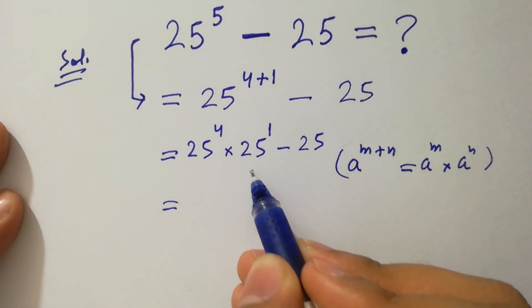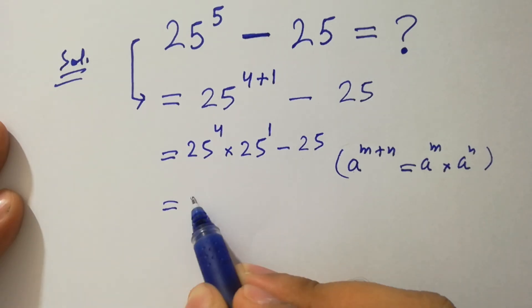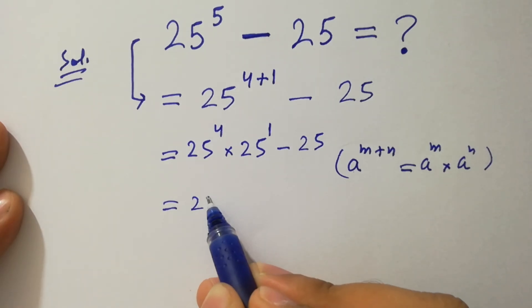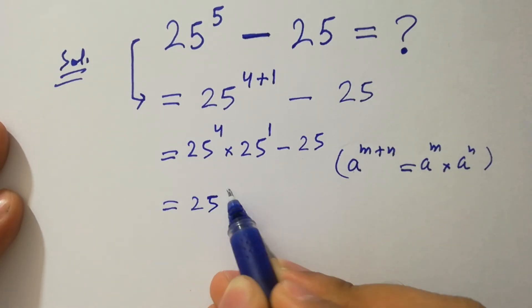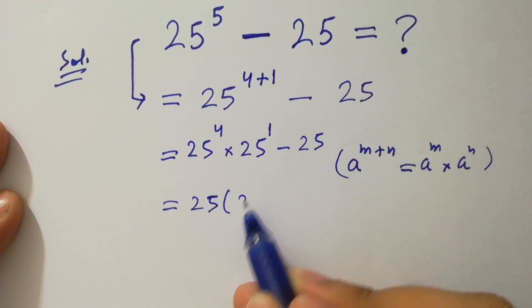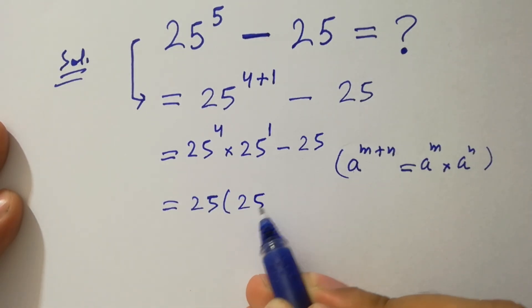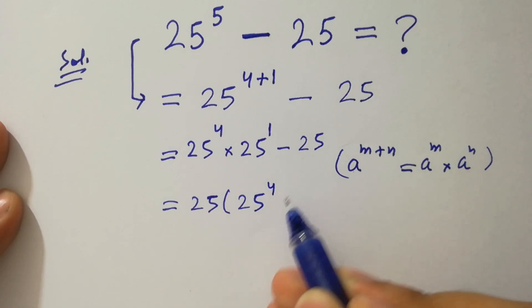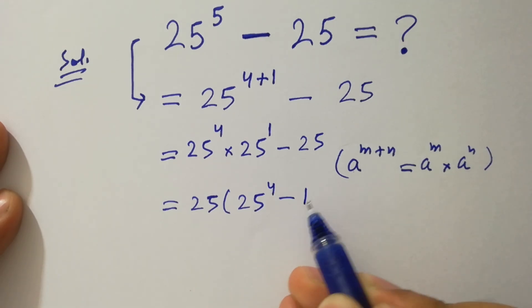A 25 can be factored out as common. We have 25 times the quantity 25 to the power 4 minus 1.